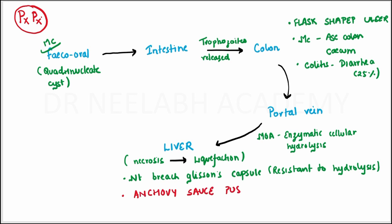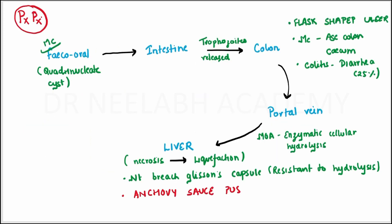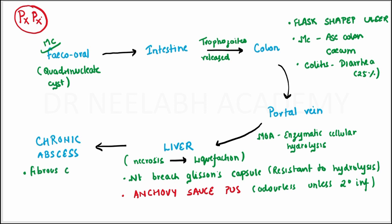The name is derived from a sauce made from a fish called anchovy. The real pus looks like this. It is odorless unless there is a secondary infection. Finally, it may take the form of a chronic abscess, which may form a fibrous capsule and may calcify.